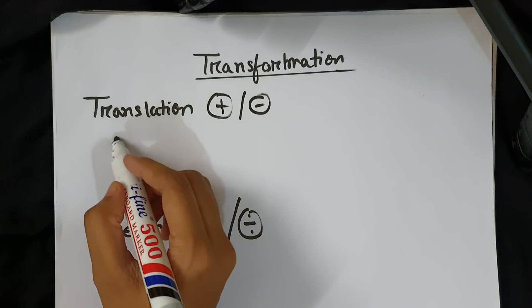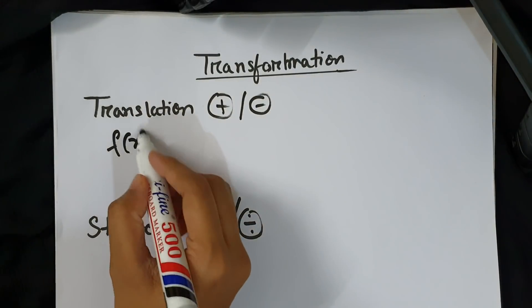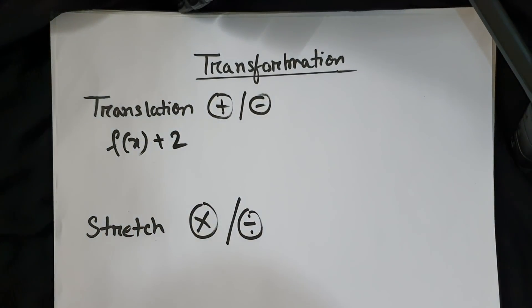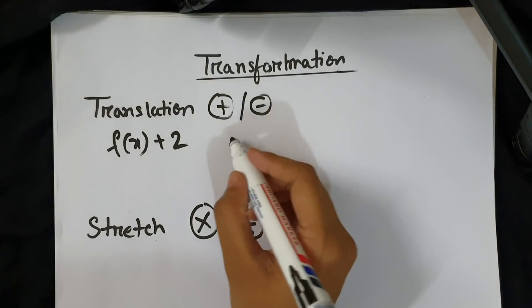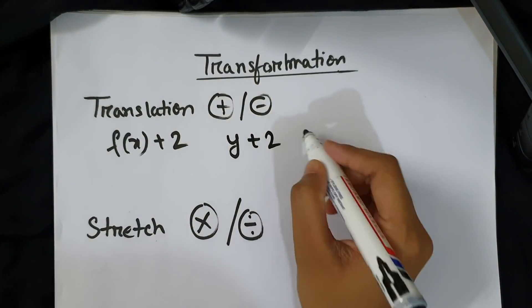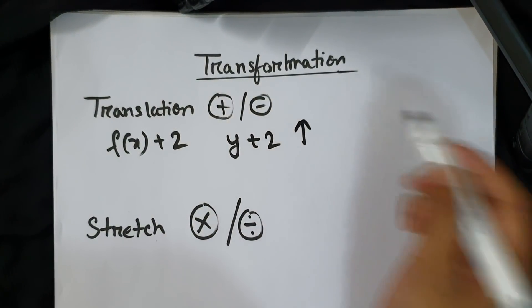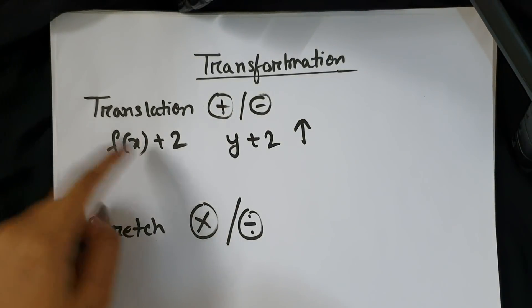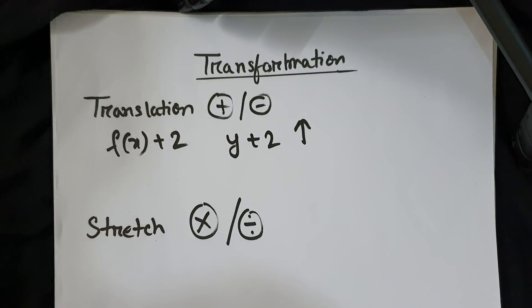Suppose we have f(x) + 2, then you have y + 2. The graph will shift 2 units vertically upward. Similarly, if you do minus 2, then the graph shifts 2 units downward.